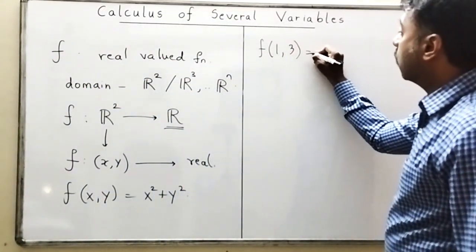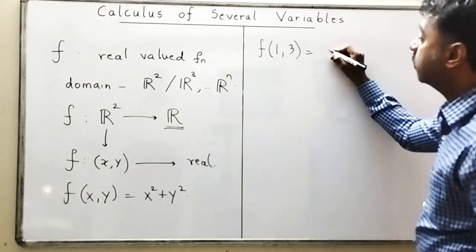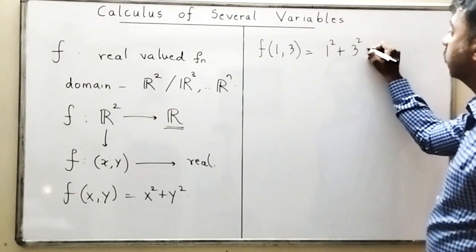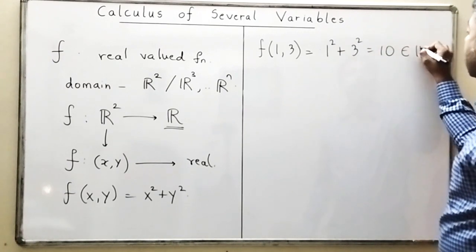So if I ask what is f(1,3), then f(1,3) is x is 1 and y is 3, so this will be giving me 1² + 3² which is 10. So this is a real number.